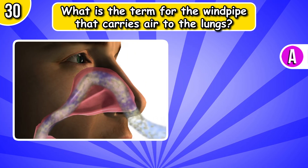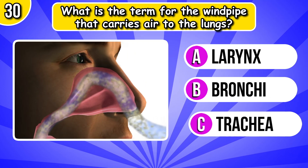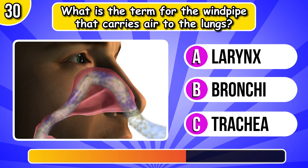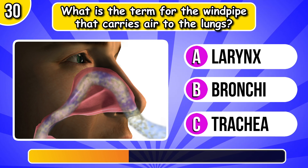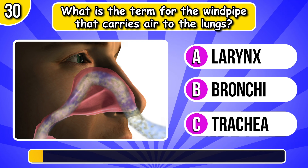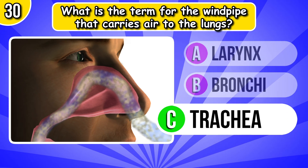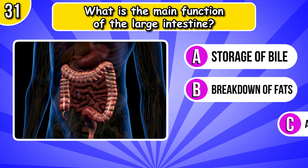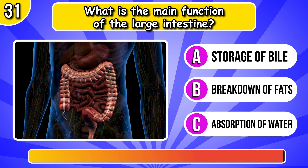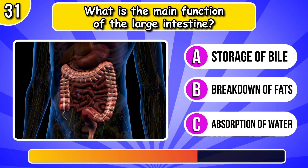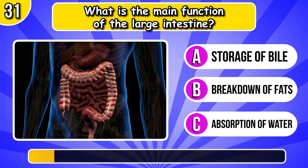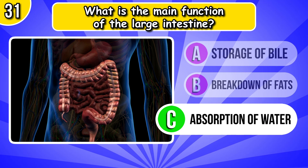What is the term for the windpipe that carries air to the lungs? It's trachea. What is the main function of the large intestine? Absorption of water.